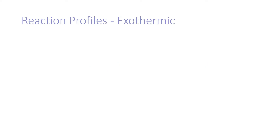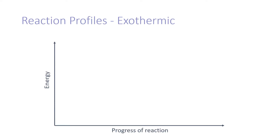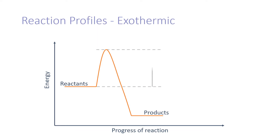Reaction profiles can be used to show the relative energies of reactants and products. This is the reaction profile for an exothermic reaction. Energy has been released as the products have a lower total energy than the reactants. Here you can see the activation energy required and the amount of energy released.